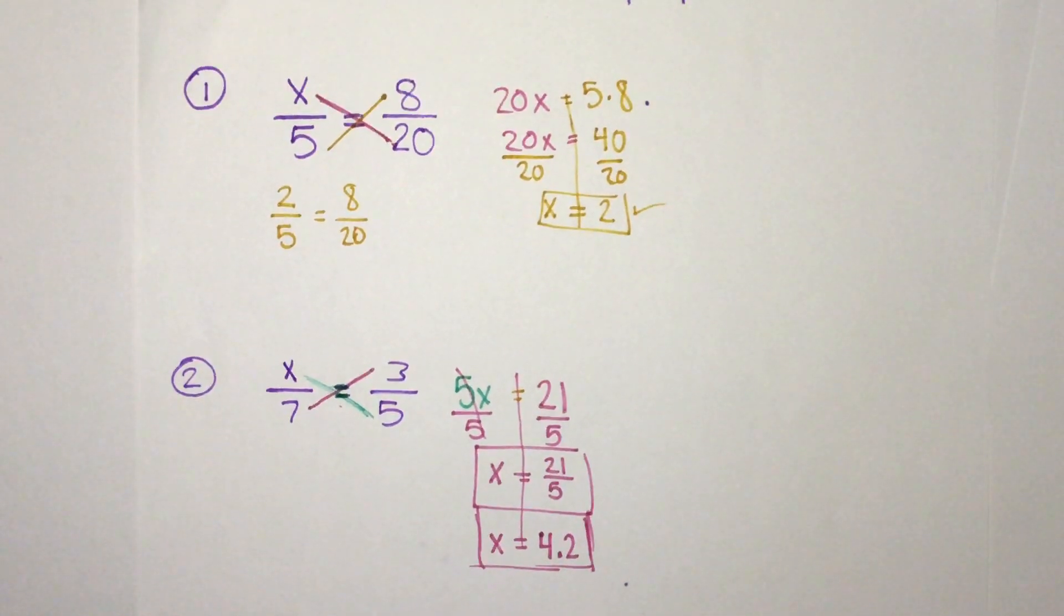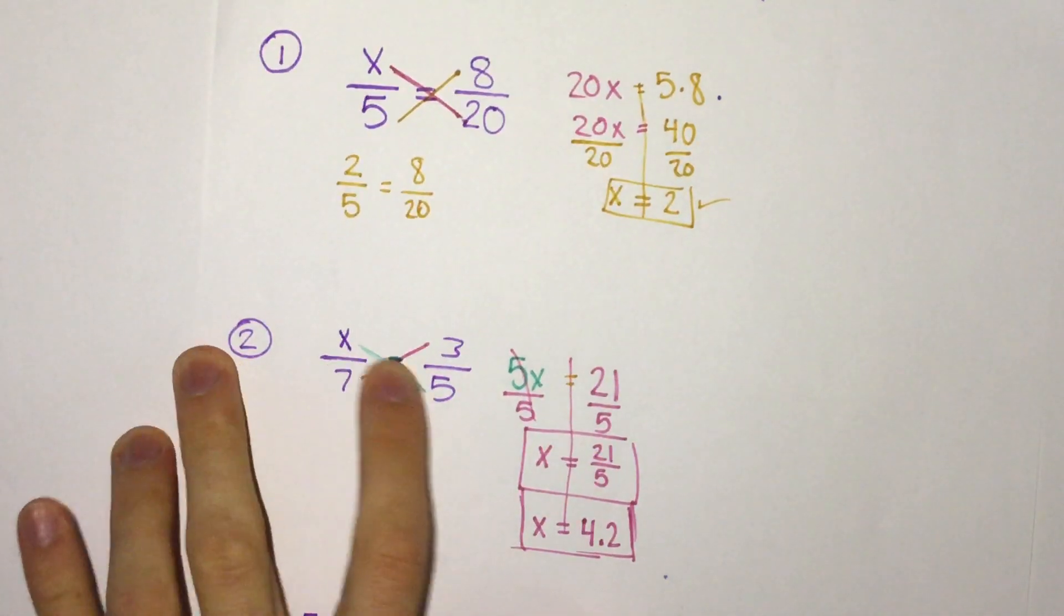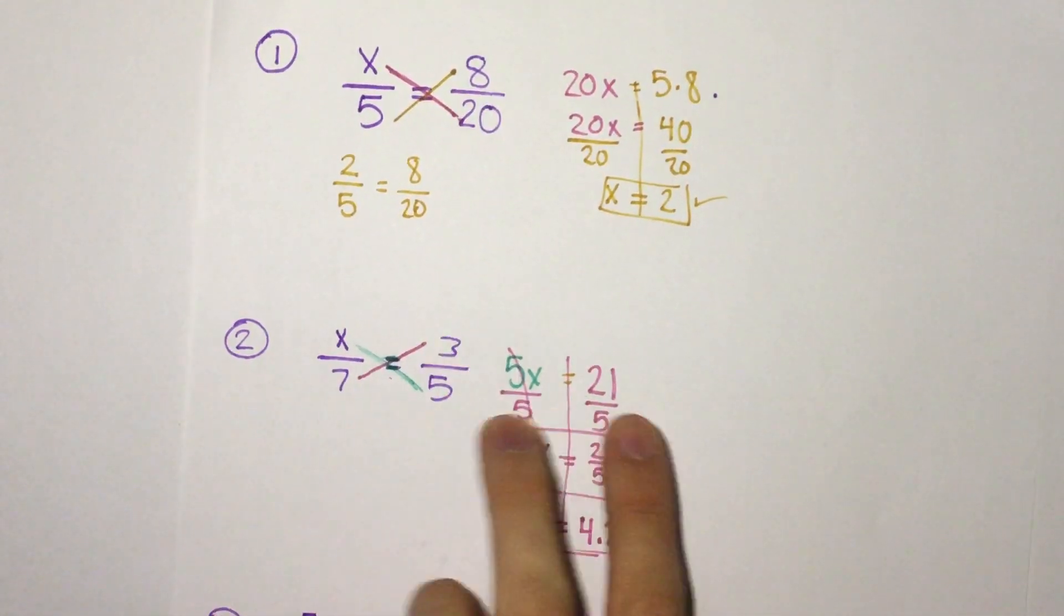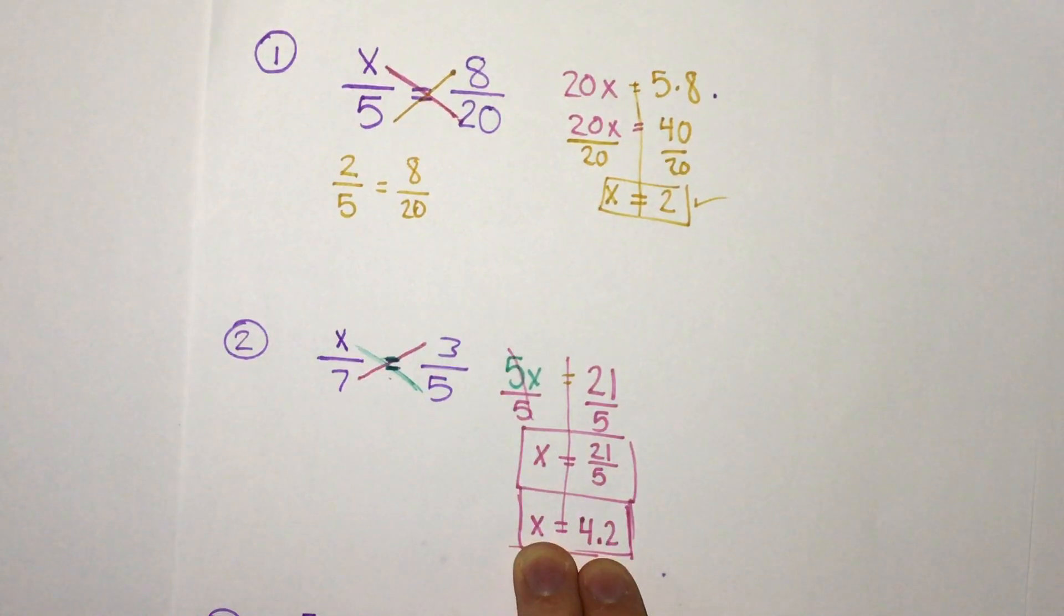So this is what we do when it's simply just one of the numbers is missing. It's x or y, z, a, whatever variable it is. We can multiply the diagonals, set them equal, and solve for x.